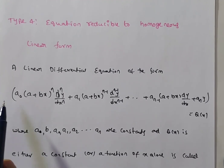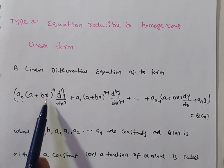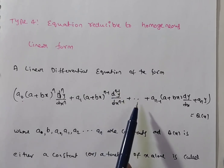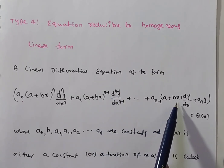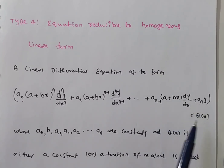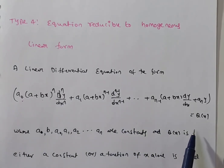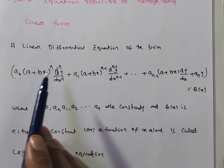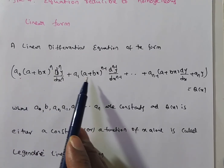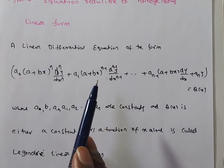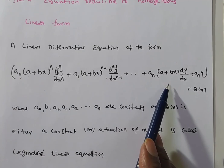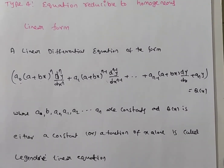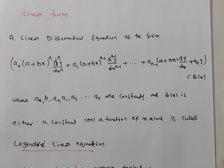The second type is the Legendre's linear equation, of the form: a₀(a + bx)ⁿ DⁿY + a₁(a + bx)ⁿ⁻¹ Dⁿ⁻¹Y + … + aₙ Y = q(x), where a₀, a₁, …, aₙ are constants. In each term, the index of (a + bx) equals the order of the derivative. This is called Legendre's linear equation.